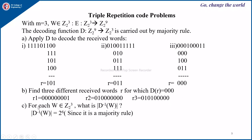You can write any 3 answers. Next, for each w belonging to Z2 raised to 3, what is the D-inverse of w? Here you require the other 6 bits, and each of those 6 bits could have 2 options. So it is 2 raised to 6, since it is a majority rule — these 6 bits affect the decryption of the word.